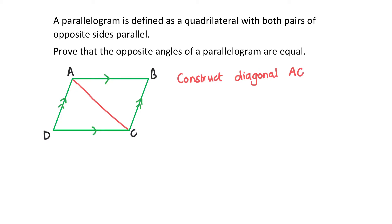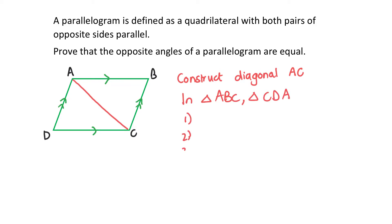If I can prove these two triangles congruent — triangle ABC and triangle CDA — then I can prove that the opposite angles are equal: angle D equals angle B. We'll need three reasons to prove the triangles congruent. Firstly, AC is common. Secondly, angle BAC equals angle ACD, and my reason is alternate angles with AB parallel to DC.